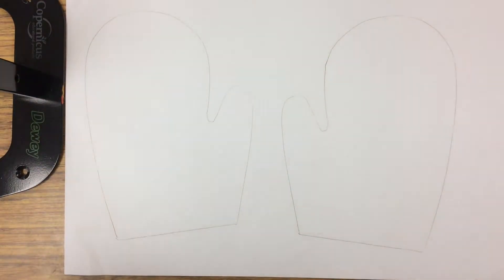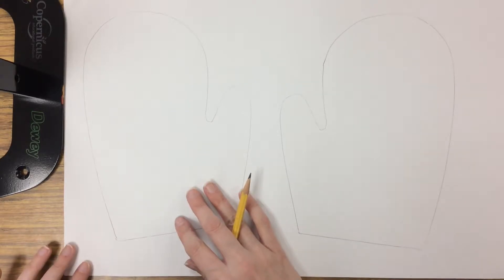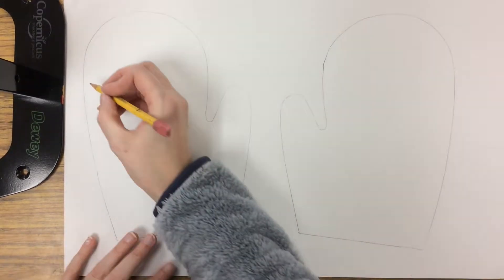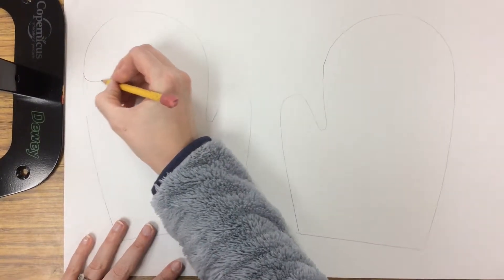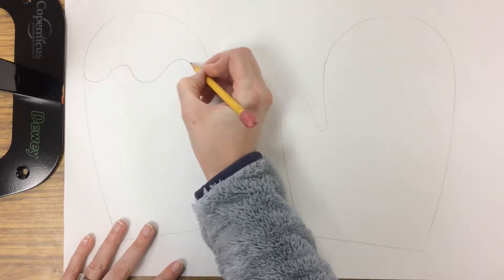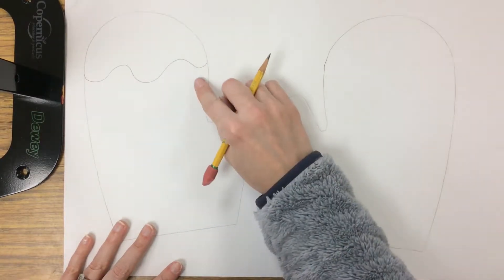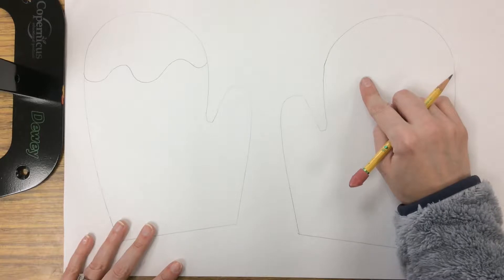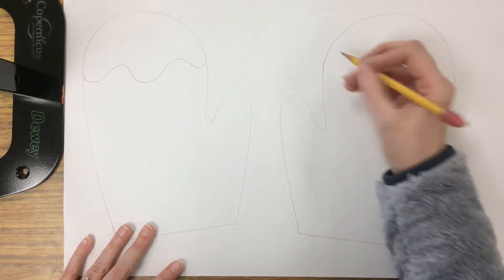So to start, you're going to want to pick out three different types of lines. Maybe I start with a wavy line. I'm going to go wavy on the left. If I do wavy on the left, I need to do wavy on the right.